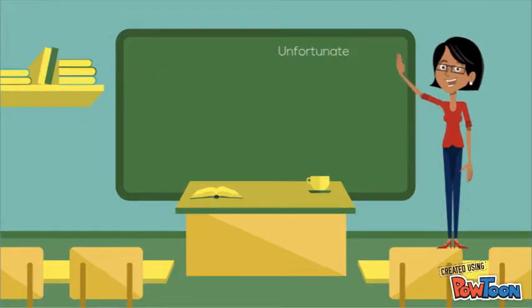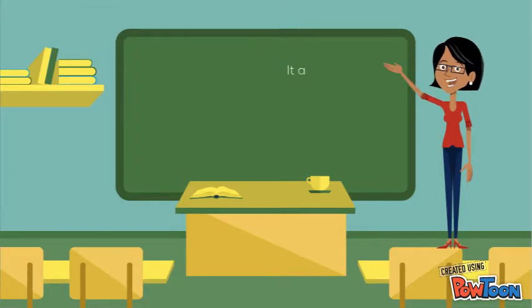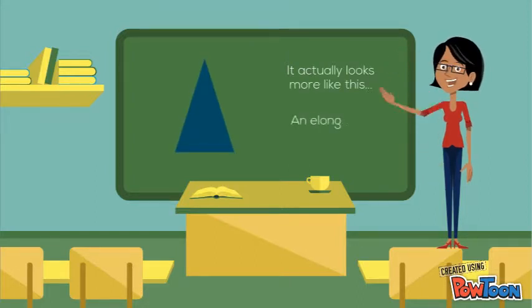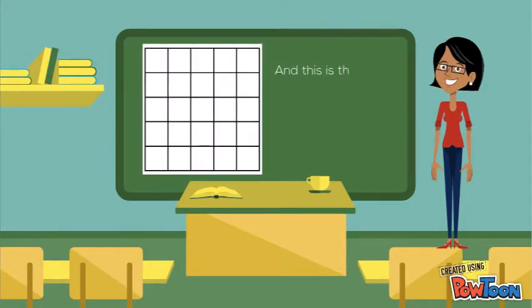Unfortunately, the robot doesn't look like this. It actually looks more like this, an elongated triangle. And this is the type of grid the robot moves on.